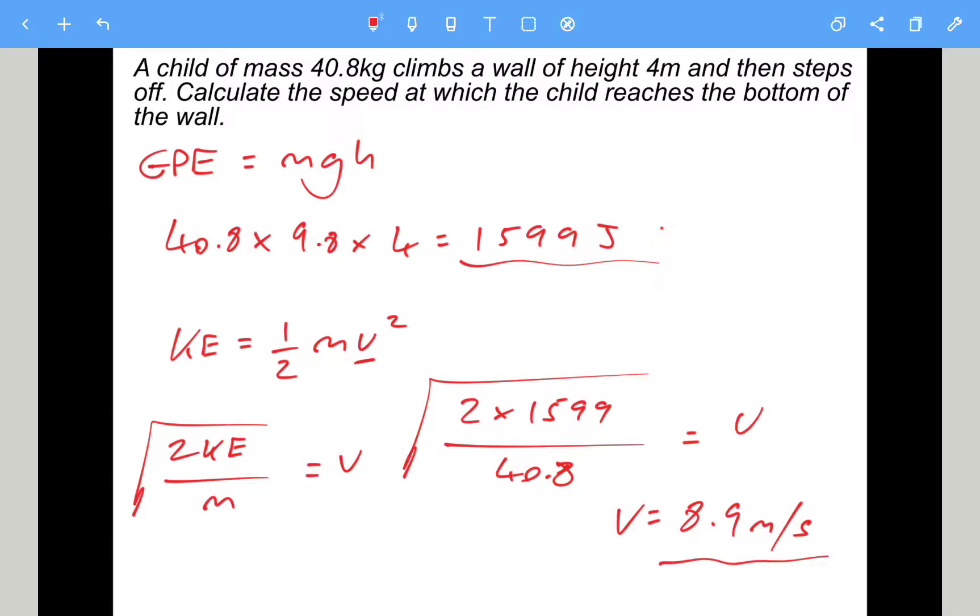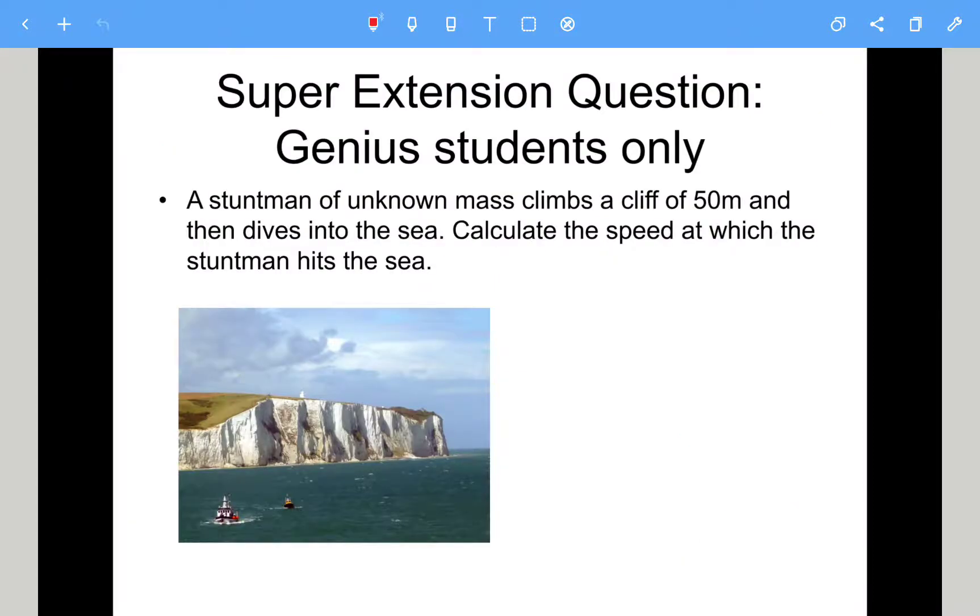If you've got that, really well done. Let's see if you can handle the next one. Final question. So this is the super extension question for genius students only. A stuntman of unknown mass climbs a cliff of 50 meters and then dives into the sea. Calculate the speed at which the stuntman hits the sea. That's it.